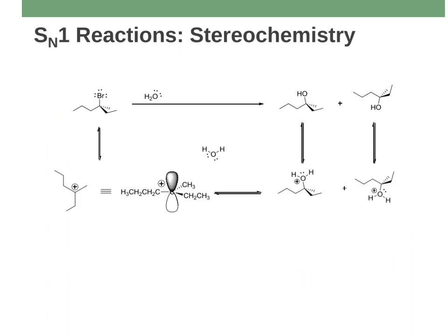Now let's talk about the stereochemical outcome of these reactions. In the previous examples I only showed molecules with three methyl groups — no chirality, no chiral centers. But in this example I do have a chiral center where the halogen is. I'm doing the reaction at that chiral center, so I need to think about stereochemistry. It looks like I've got the S configuration of this alkyl halide, and on the right-hand side I'm going to produce two different stereoisomers — one S and one R.